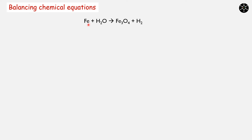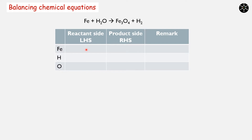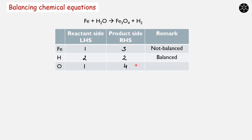Consider the reaction: Fe + H₂O → Fe₃O₄ + H₂. On the left hand side, we have 1 iron atom, 2 hydrogen atoms, and 1 oxygen atom. On the right hand side, we have 3 iron atoms, 2 hydrogen atoms, and 4 oxygen atoms. So iron: LHS ≠ RHS — not balanced. Hydrogen is present in the same number — balanced. Oxygen is present in different numbers — not balanced. In the next slide, let us learn how to balance this reaction.